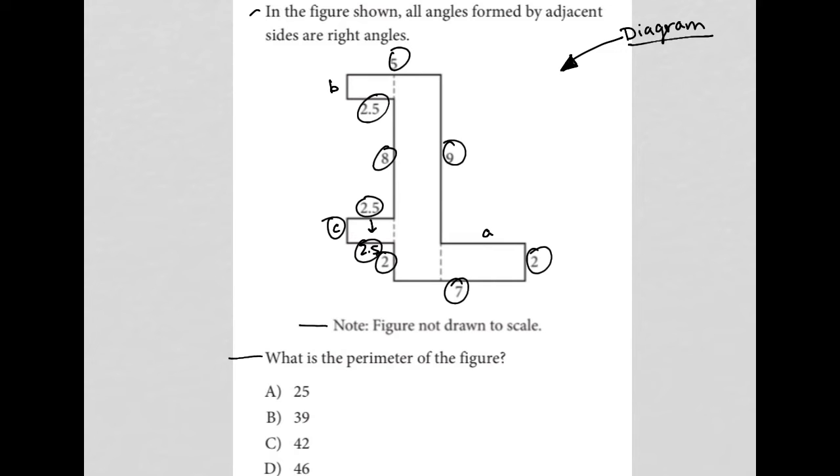And when I do that, I get 40.5. So that means A is gone, B is gone, because we know it has to be bigger than 40.5. So with that 40.5, I only have 42 left and 46 left.